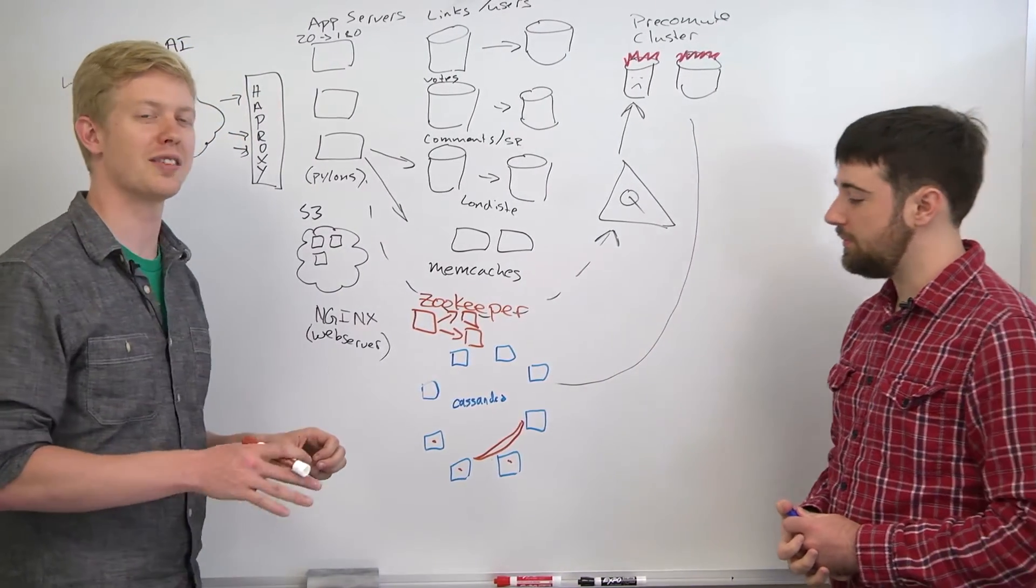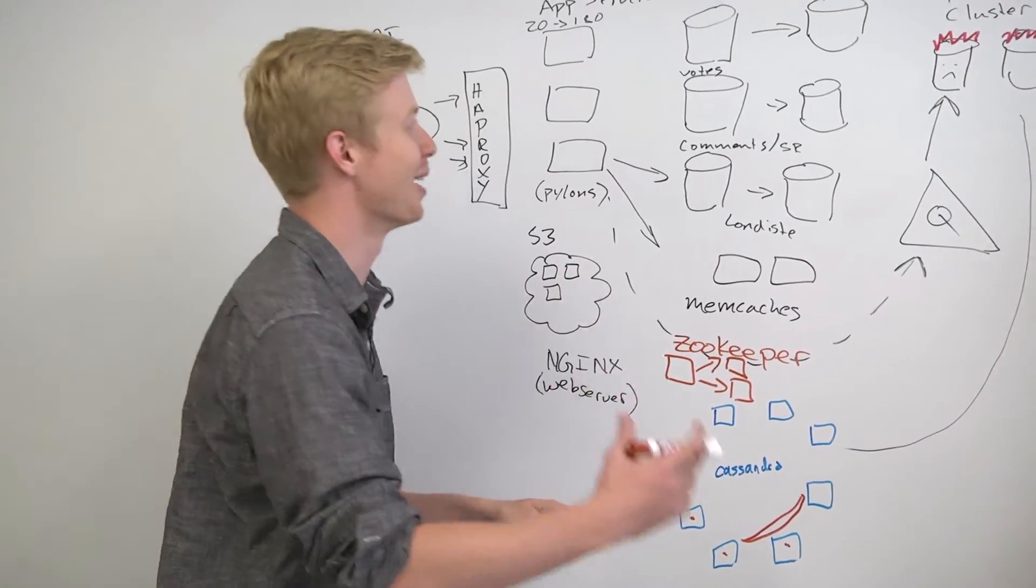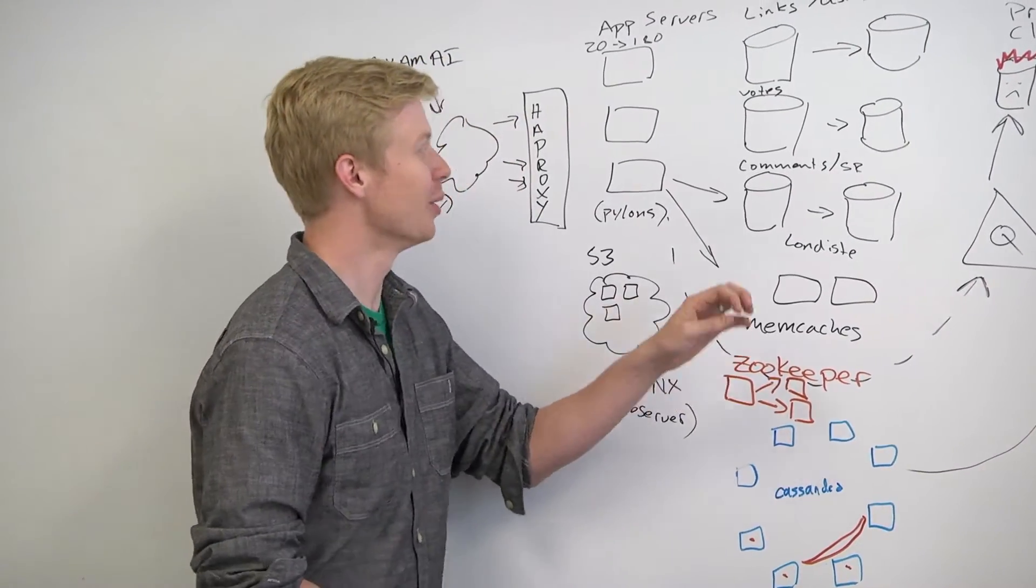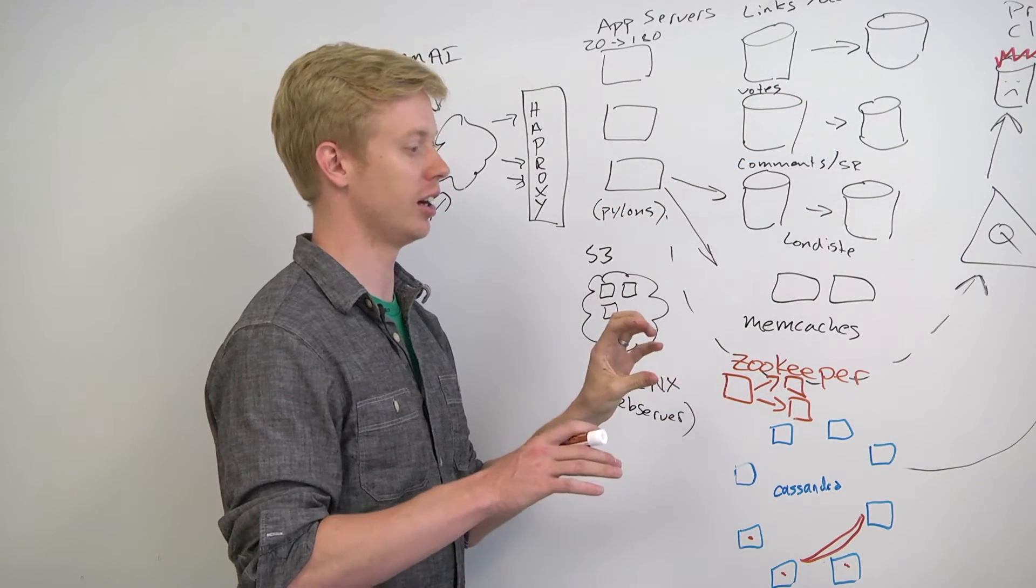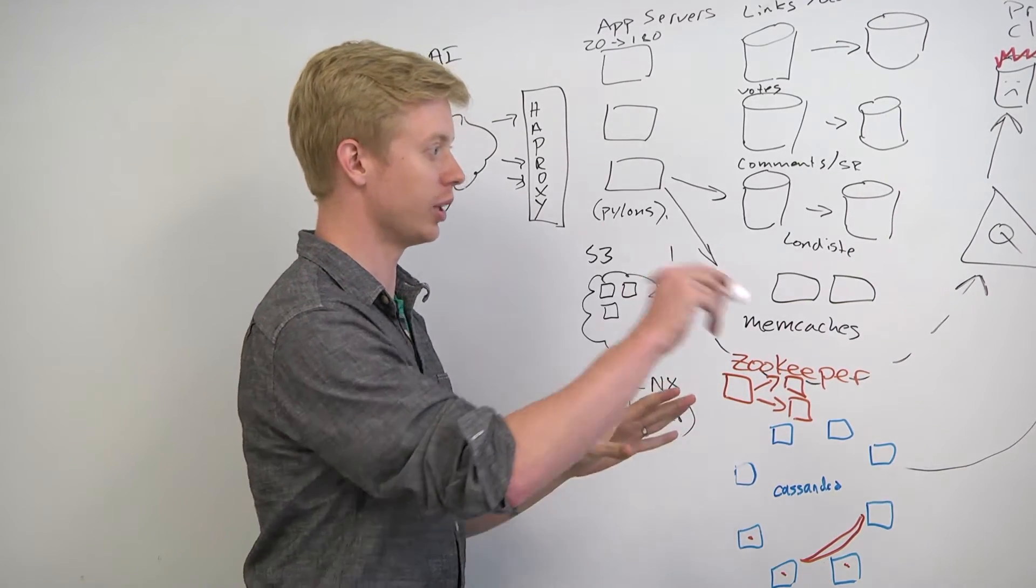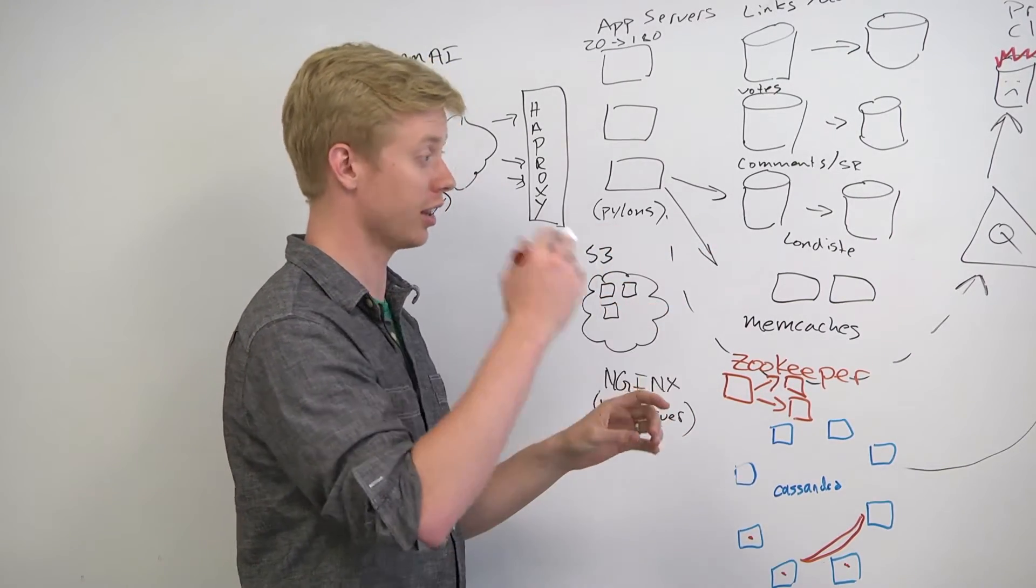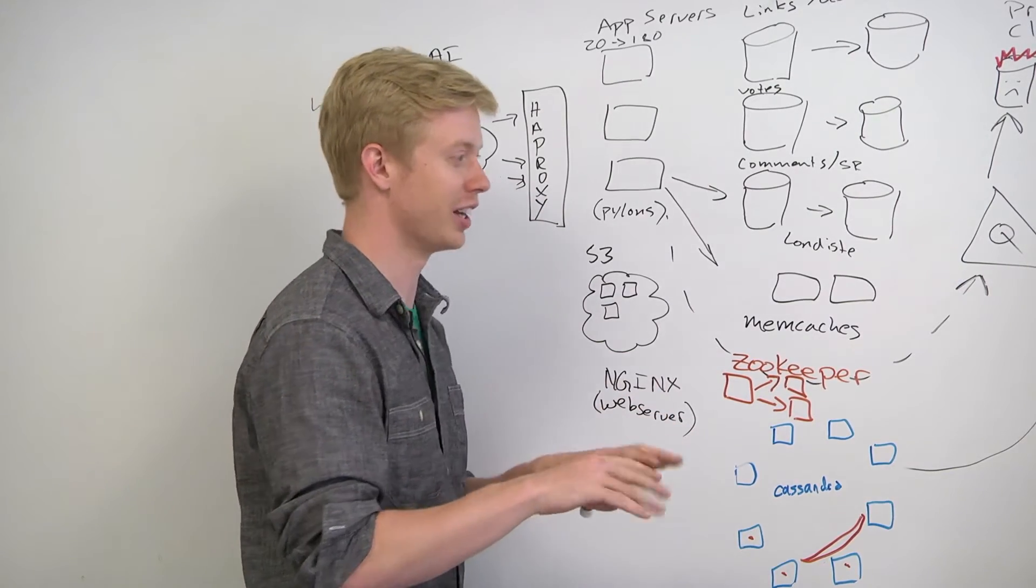One thing I used to do, this is kind of a hacky thing, I can feel people losing respect for me as I describe this, is whenever we would bring up a new database slave, I would actually go into the database and I would have an app server that would connect only to that machine and then I would hit all of the most popular pages. I knew they were the most popular, I'd do it by hand, I'd go to Reddit hot, funny hot, pics hot,